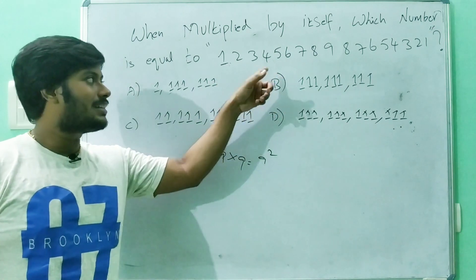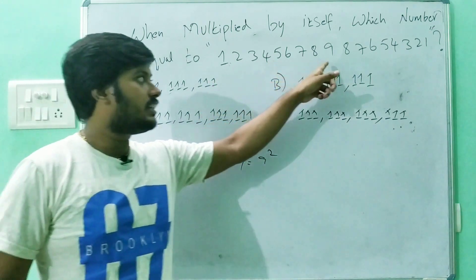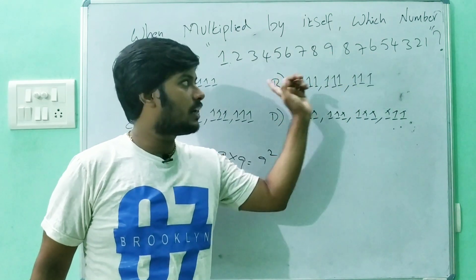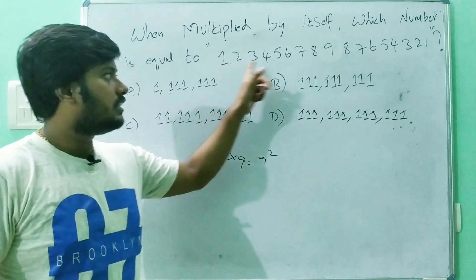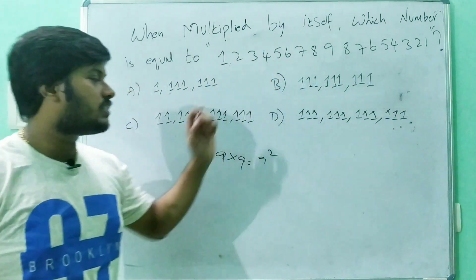The answer is 1, 2, 3, 4, 5, 6, 7, 8, 9, 8, 7, 6, 5, 4, 3, 2, 1. This number is a palindrome number — it reads the same left to right and right to left.